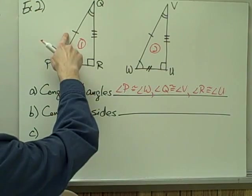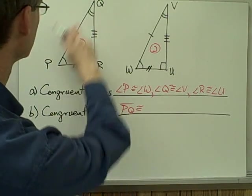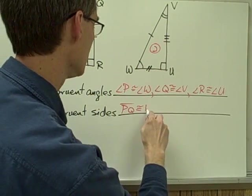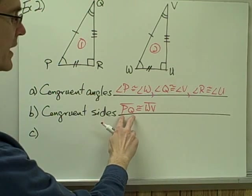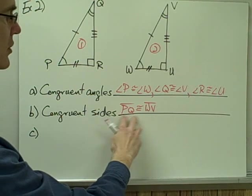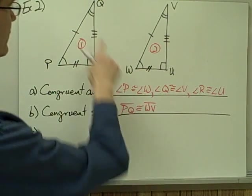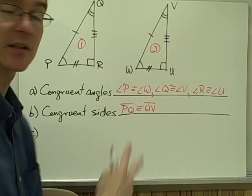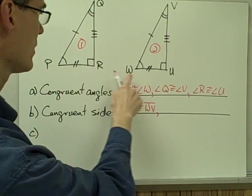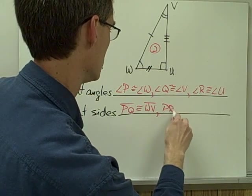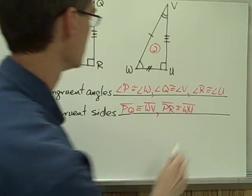Now my congruent sides. Here are my single hash marks — segment PQ is congruent to segment WV. Notice when I write down the congruence statement for my segments, I'm going in corresponding order. PQ and WV — angle P and angle W are congruent, angle Q and V are congruent, so they are in the same relative position in the congruence statement.